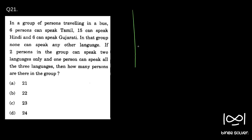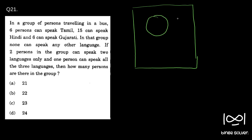This is a Venn diagram question — I'll draw a Venn diagram and explain. Let this be the first circle, this be the second circle, and this be the third circle. So let this be the Tamil speaking circle: six Tamil speaking, six Hindi speaking — wait, fifteen Hindi speaking — and Gujarati speaking six.